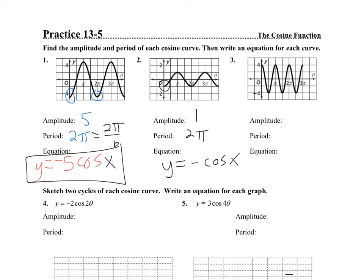The amplitude here is 4. It's a positive cosine function because it's starting up, and the period is π. To solve for B, I set the period equal to 2π over B, so B has to be 2. My equation is y equals positive 4 cosine of 2x.